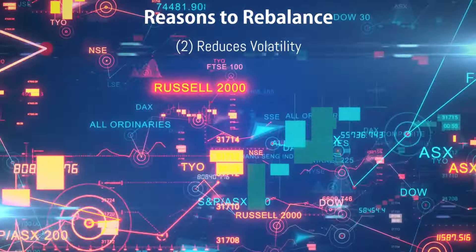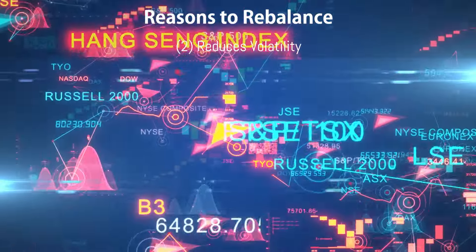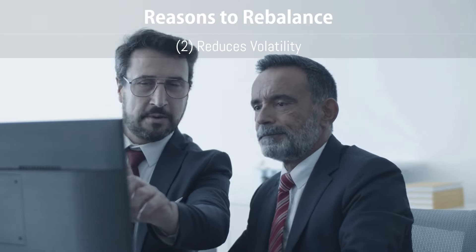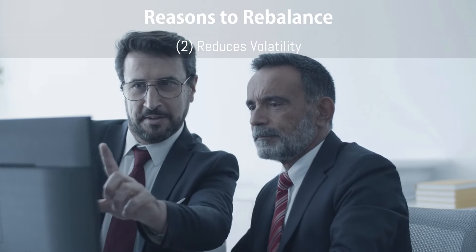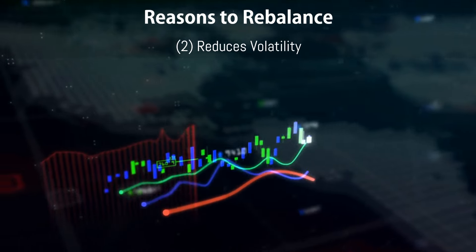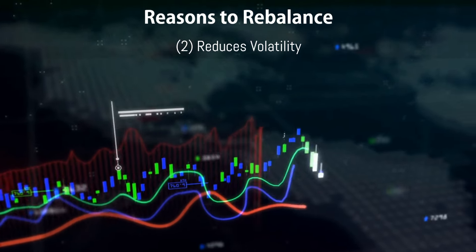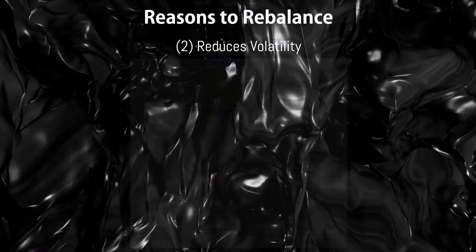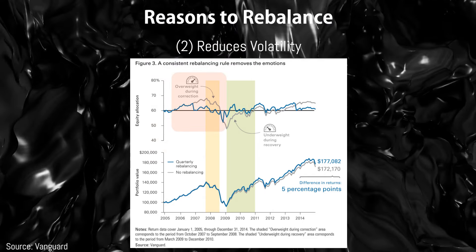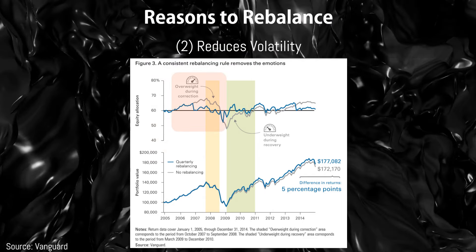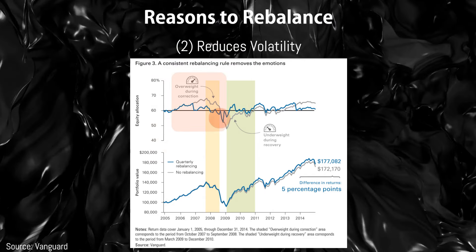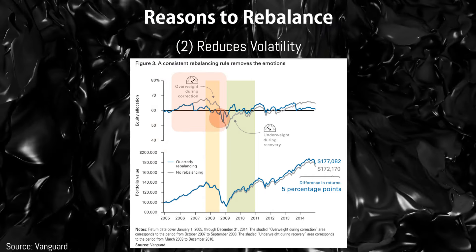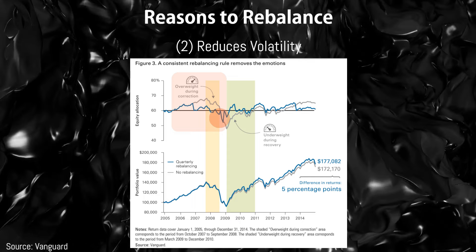Second, by reducing concentration risk, especially in stocks, rebalancing reduces portfolio volatility, since stocks have historically outperformed bonds over the long term. For example, if your equities have outperformed, rebalancing means selling some stocks and buying bonds, resulting in lower portfolio volatility.